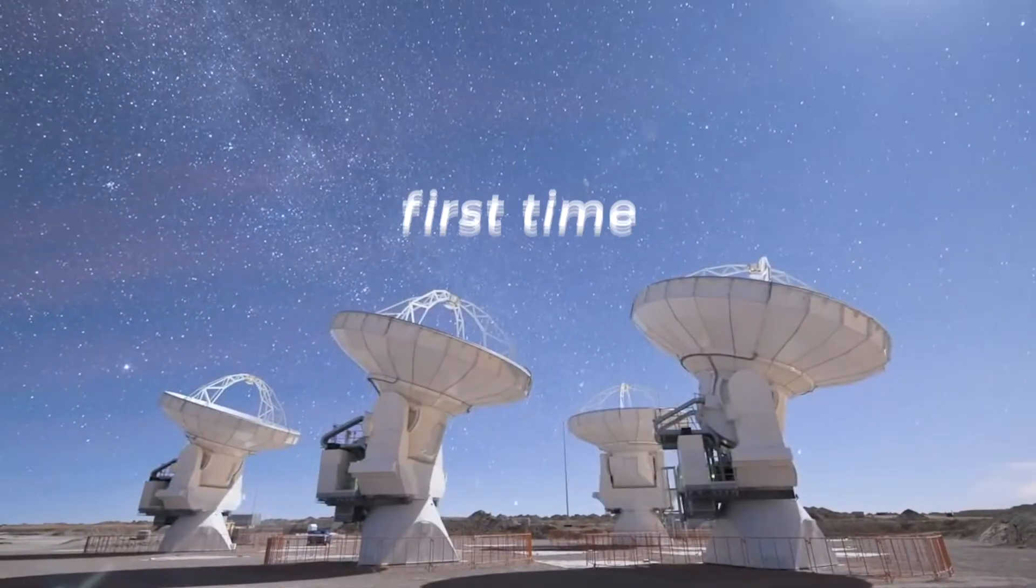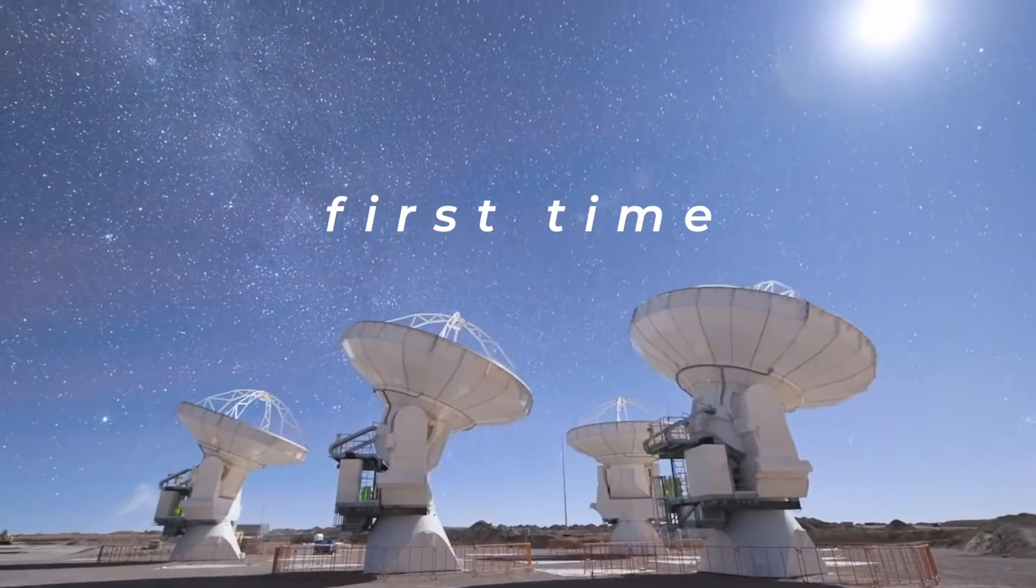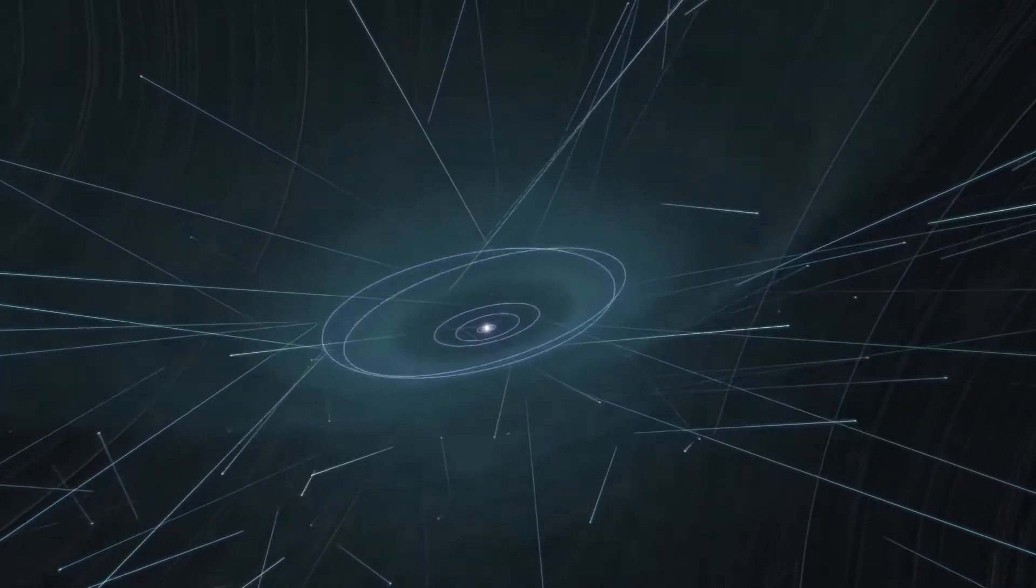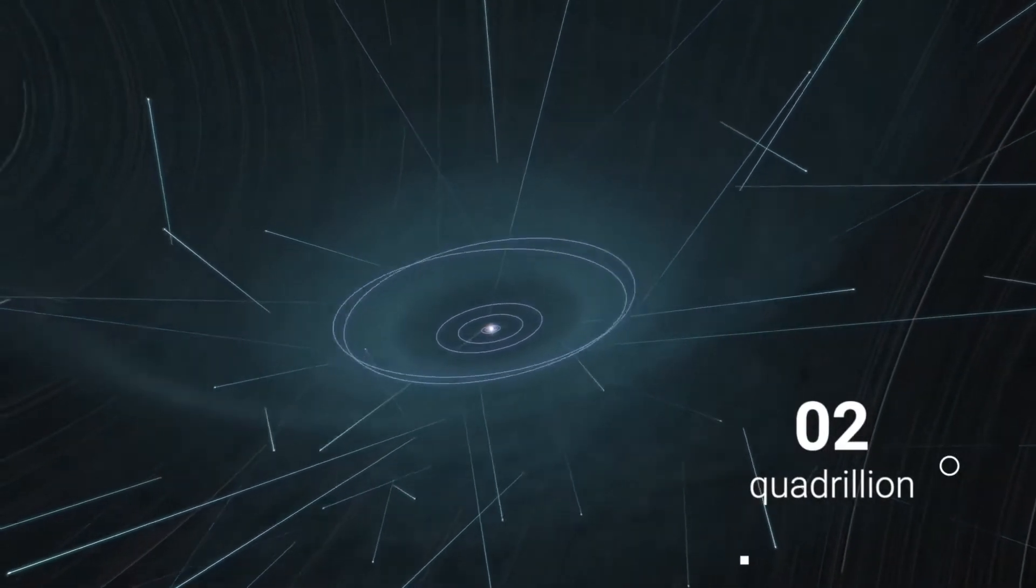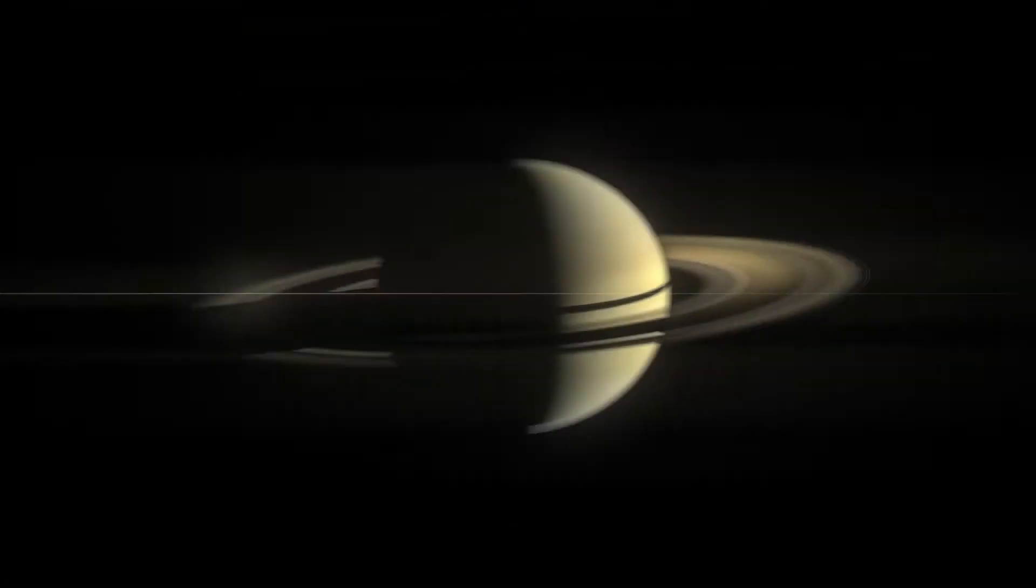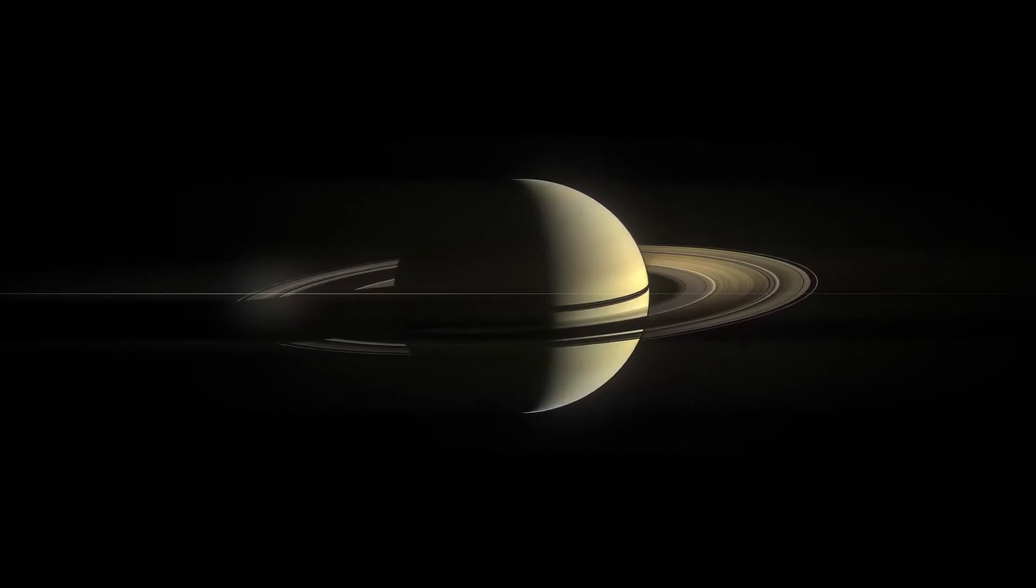For the first time, astronomers have detected a ring of dust circling around another planet in an entirely different solar system, two quadrillion miles away. The planet Saturn in our own solar system is well known for its brilliant system of rings.